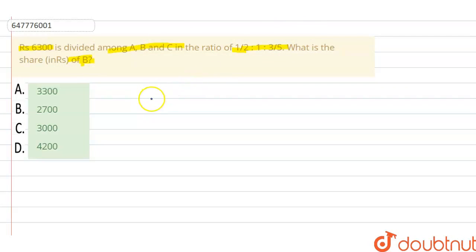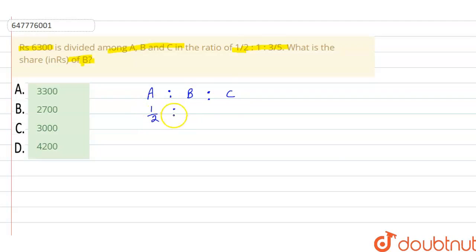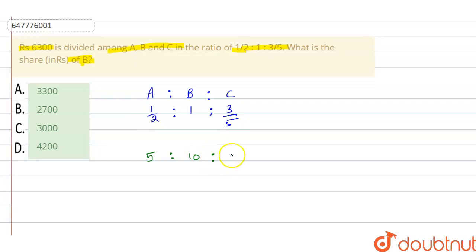So first, what is the ratio given? A : B : C is 1/2 : 1 : 3/5. When you have this ratio, multiplying through, it becomes 5 : 10 : 6.